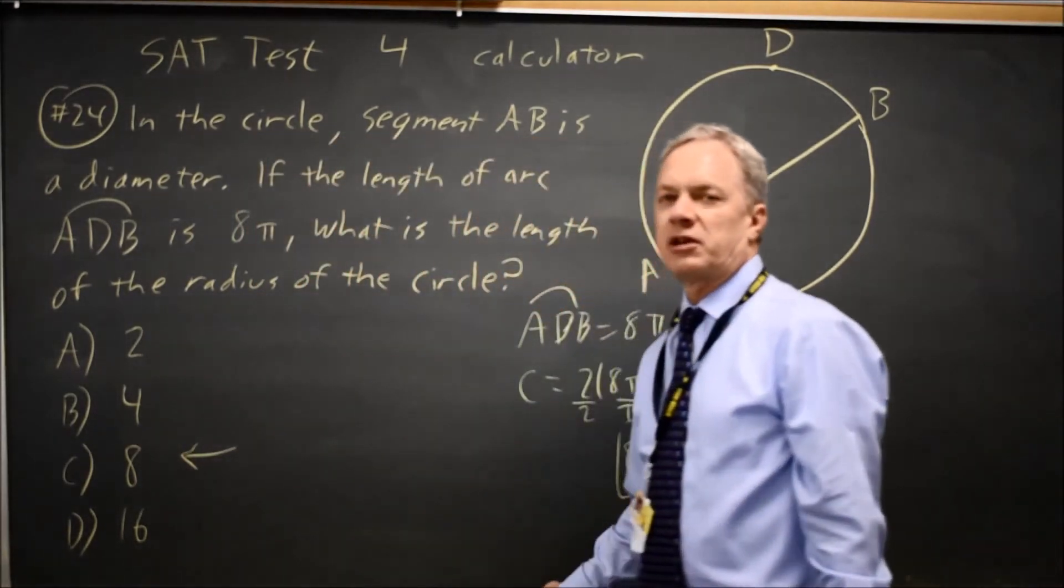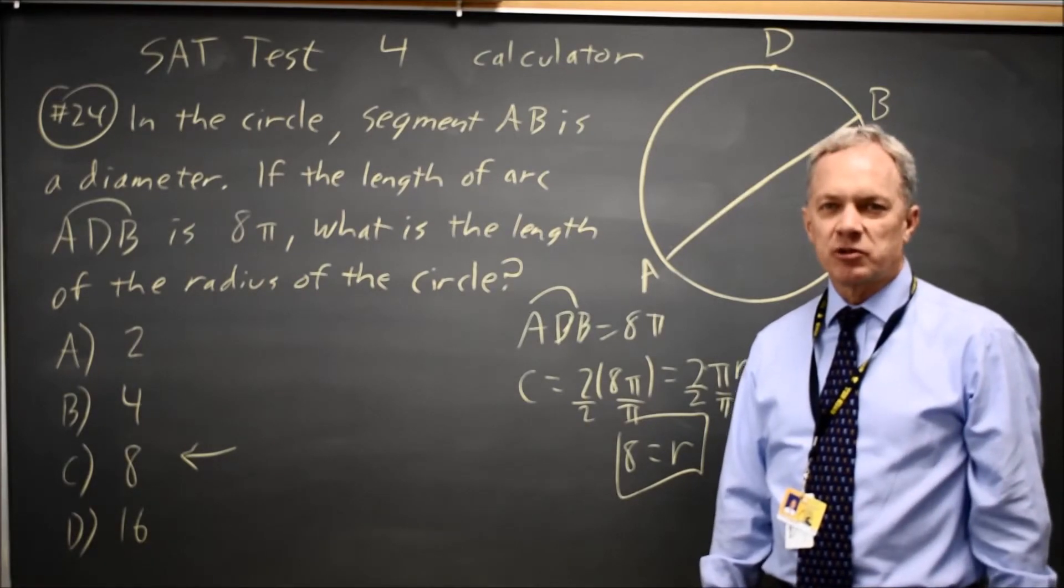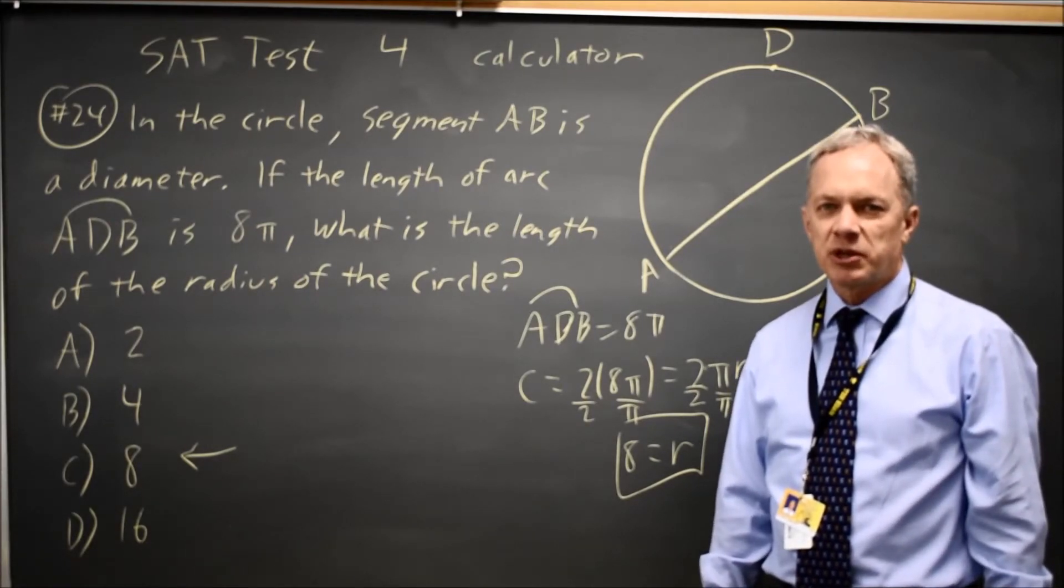When you're looking for the radius and you have the circumference or some known fraction of the circumference, we can use the formula circumference is 2 times pi times r.